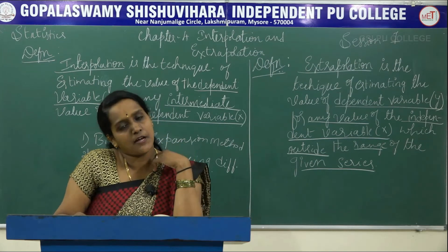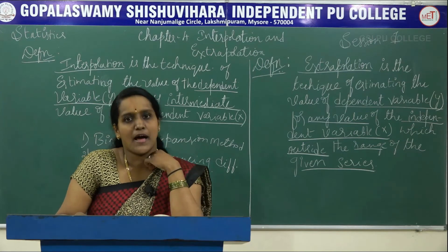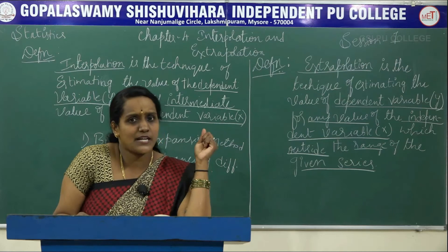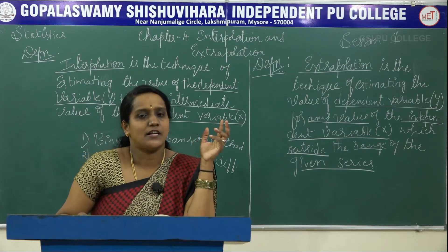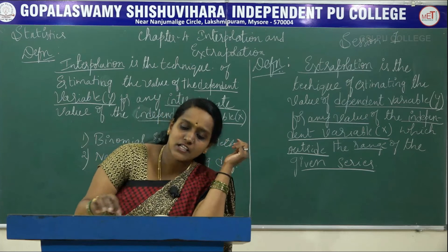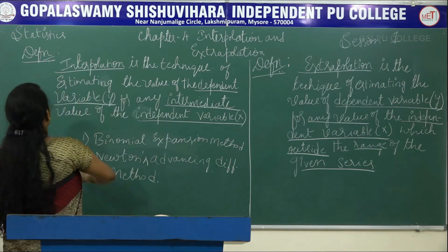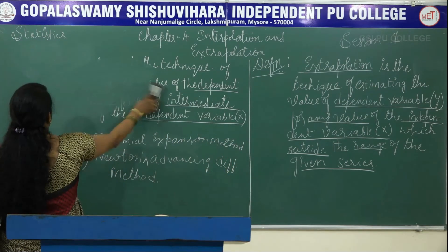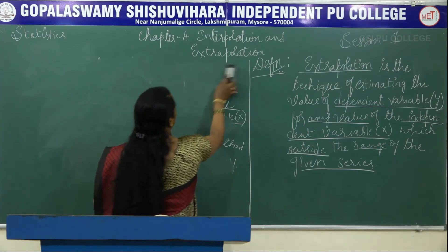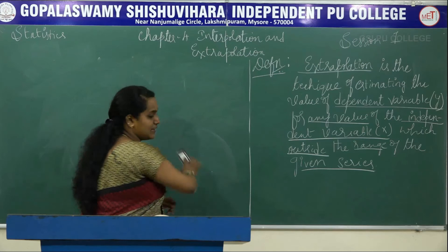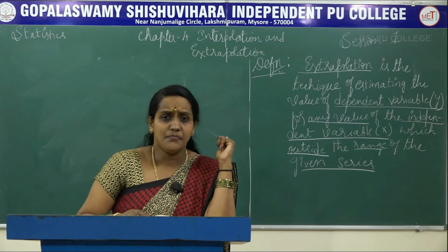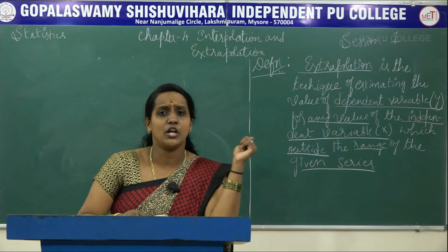We have already studied the binomial expansion method with one missing value. Here, in the binomial expansion method, we are going to calculate two missing values. To apply this method, we need a Pascal triangle — do you know how to write the Pascal triangle? Let me recall that.